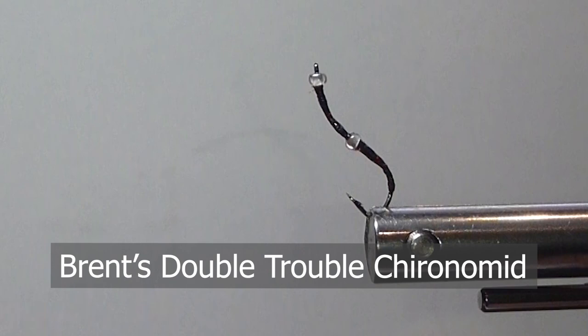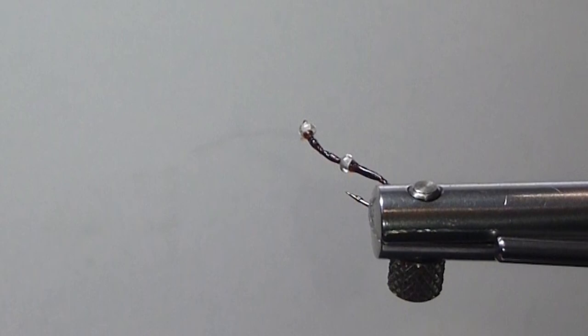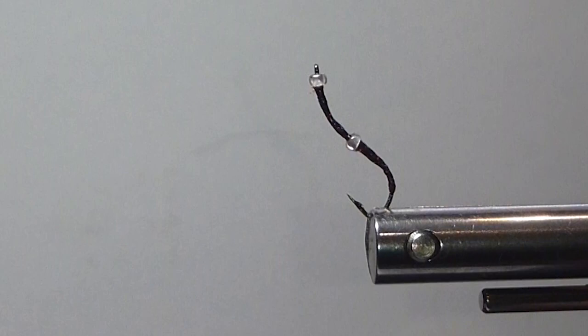Here's a little fly that I was just looking through some of my materials last year and these hooks, these swimming nymph hooks, gave me an idea about doing two midges on one of these, two chronimids.